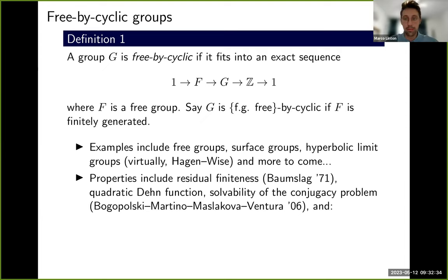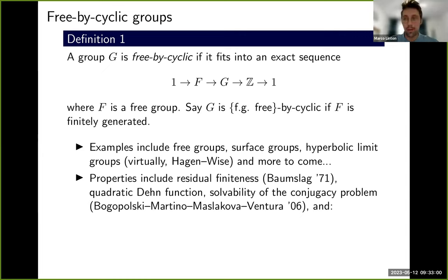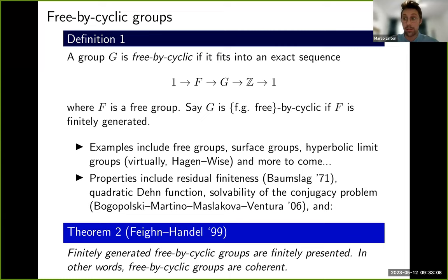The structure given by this exact sequence allows one to prove many strong results for these groups. For example, Baumslag showed that all these groups are residually finite. They all have quadratic Dehn functions, and their conjugacy problem is solvable — this is due to Bogopolski, Martino, Maslakova, and Ventura in the finitely generated free case, but it carries over to general free bicyclic groups. The property most relevant to this talk is coherence: a group is coherent if all of its finitely generated subgroups are finitely presented. Feighn–Handel showed in '99 that all finitely generated free bicyclic groups are finitely presented. Every subgroup of a free bicyclic group is free bicyclic, which in particular implies that all free bicyclic groups are coherent.